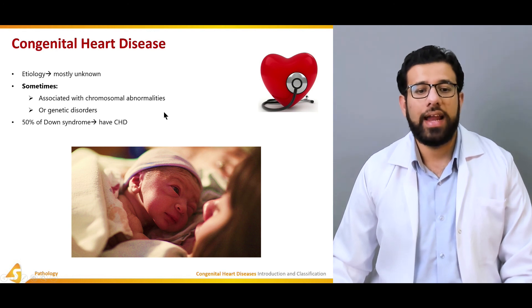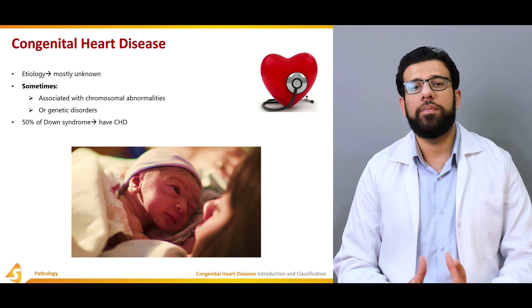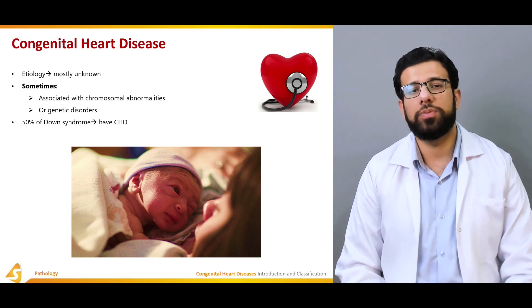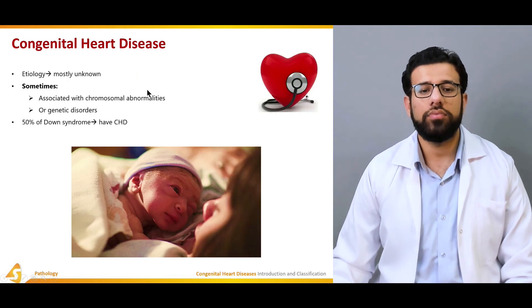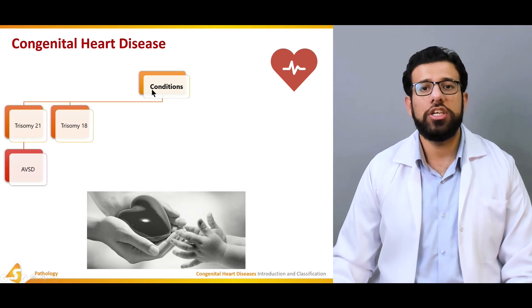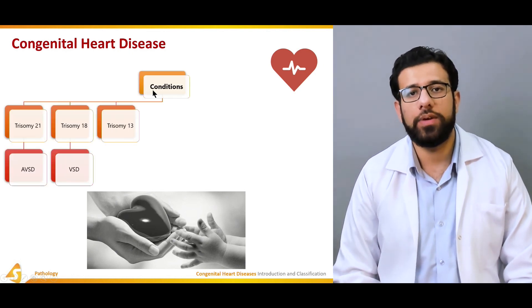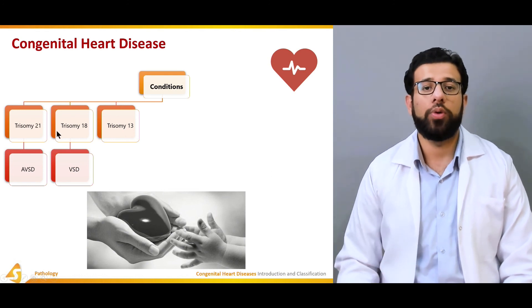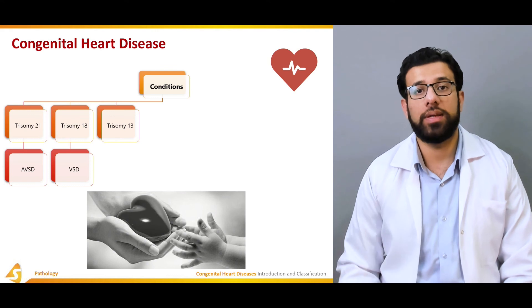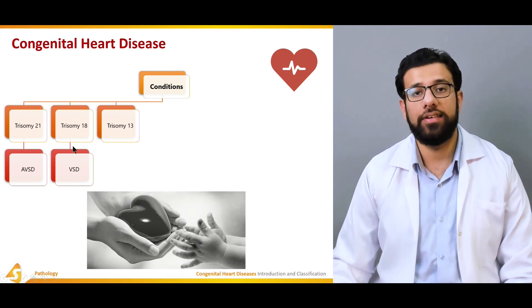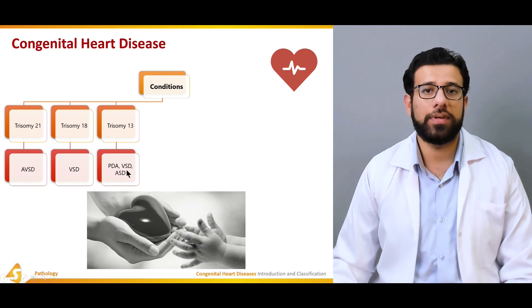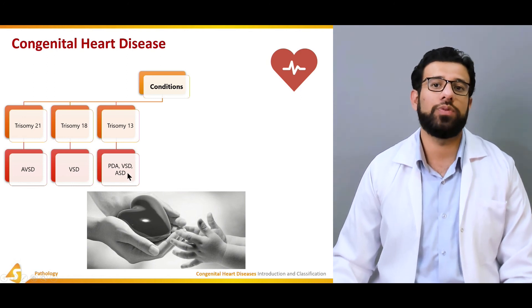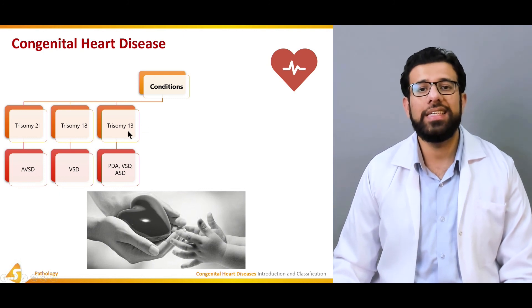Congenital heart disease is associated with chromosomal abnormalities. 50% of children with Down syndrome have a great predisposition to certain types of congenital heart diseases. Trisomy 21 is mostly related to atrioventricular septal defect; trisomy 18 is related to ventricular septal defect; and trisomy 13 is associated with patent ductus arteriosus, ventricular septal defect, and ASD.